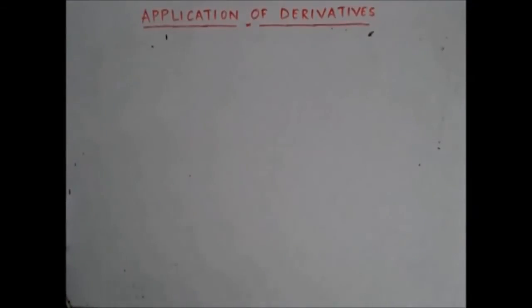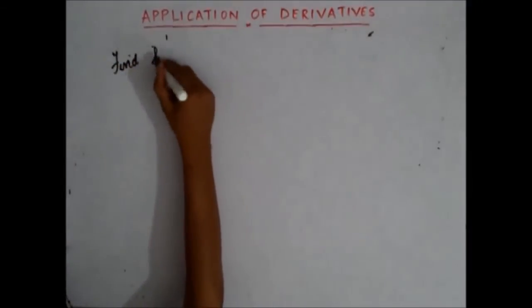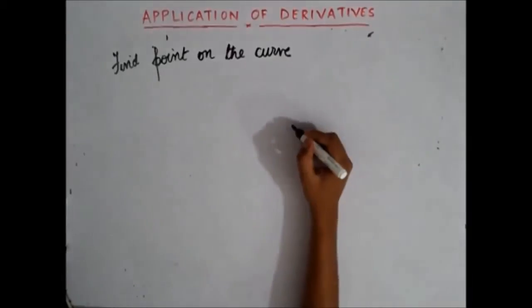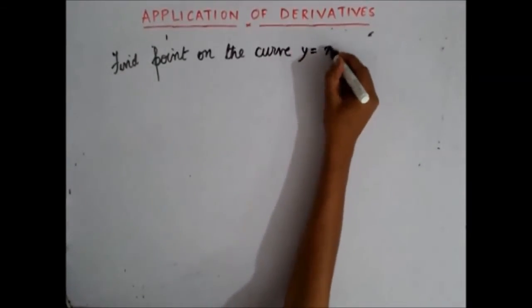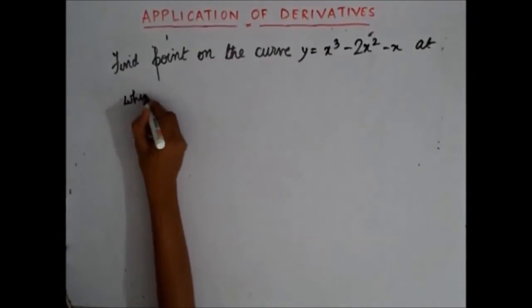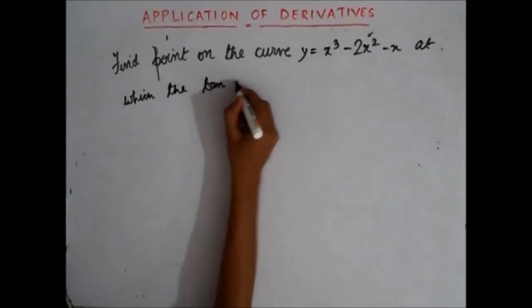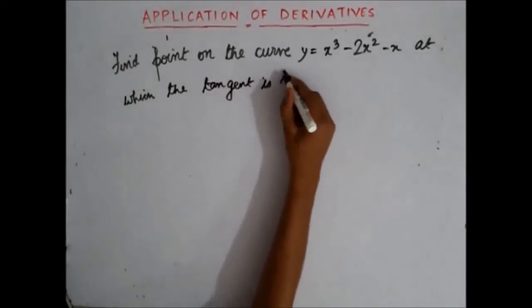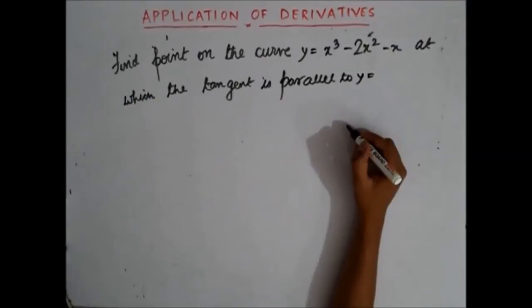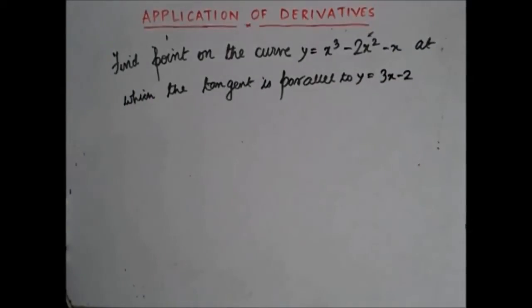The next question is: find the point on the curve y = x³ - 2x² - x at which the tangent is parallel to y = 3x - 2.